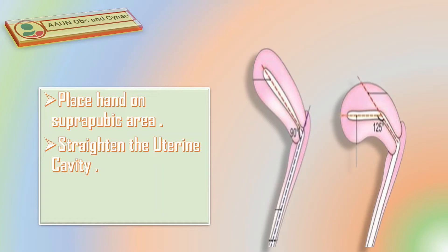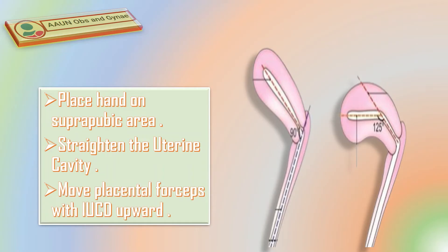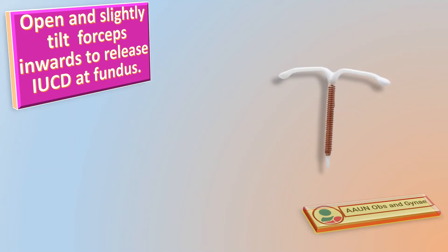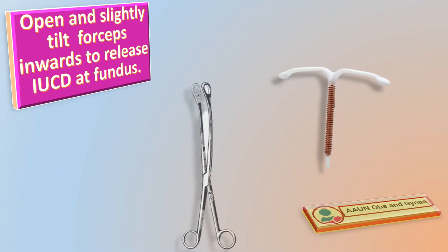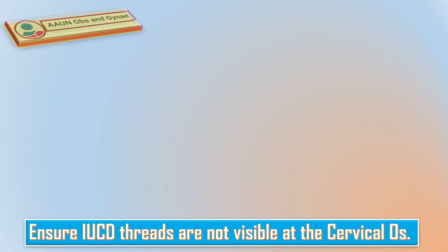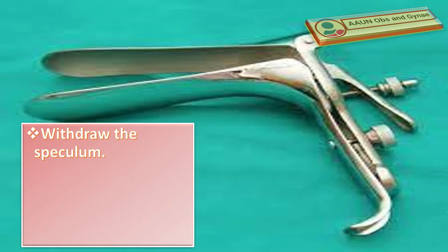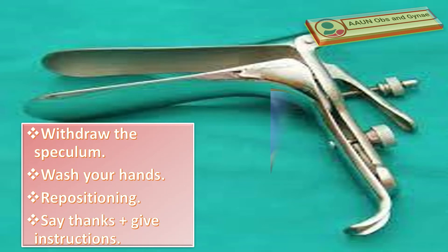I will gently push the uterus upward to straighten the uterine cavity. I will move the placental forceps with IUCD upward following the contour of the uterine cavity until the fundus is reached. I will open and slightly tilt the forceps inward to release the IUCD at the fundus. Then, keeping the uterus stabilized, I will slowly sweep the forceps along the side of the uterine wall. I will ensure IUCD threads are not visible at the cervical os, then withdraw the speculum gently.